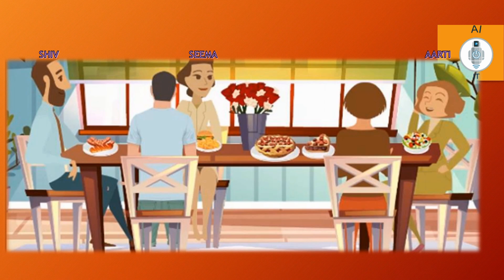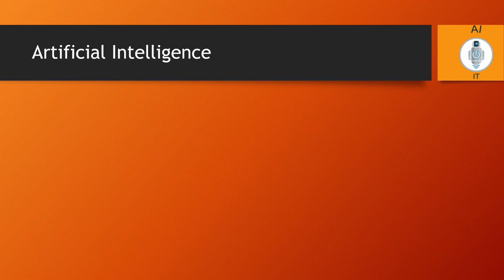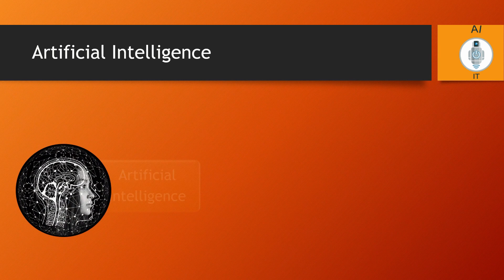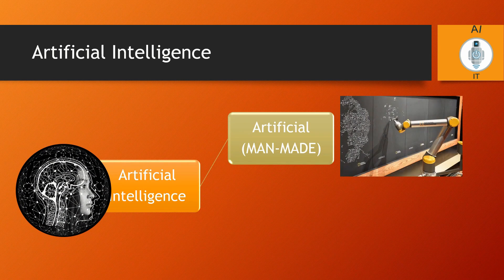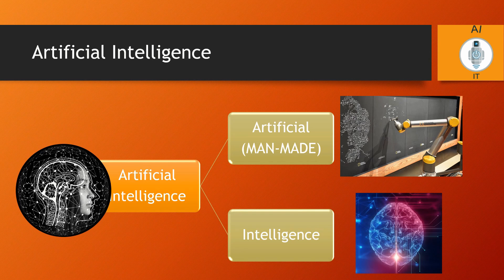With these two examples, we understand that decision-making comprises a crucial part of intelligence. Now, what is artificial intelligence? When a machine possesses the ability to mimic human traits, take decisions, predict the future, and learn and improve on its own, we say that it is artificial intelligence. A machine is artificially intelligent when it can do tasks by itself — by collecting data, understanding it, analyzing it, learning from it, and improving.